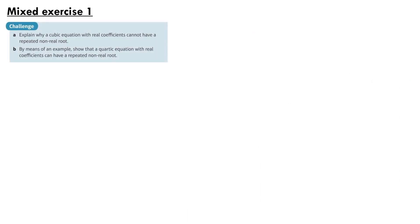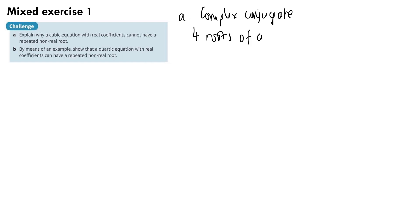Our last question from mixed exercise 1, part a, asks us to explain why a cubic equation with real coefficients cannot have a repeated non-real root. If we suppose it can, then the complex conjugate of that non-real root must also be a repeated non-real root. That gives us four roots of a cubic, which is a contradiction, since all cubics have exactly three roots. Therefore a cubic equation with real coefficients cannot have a repeated non-real root.